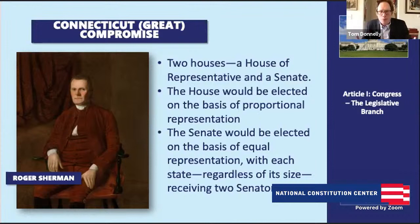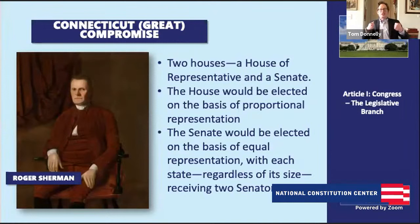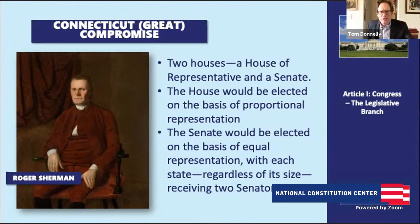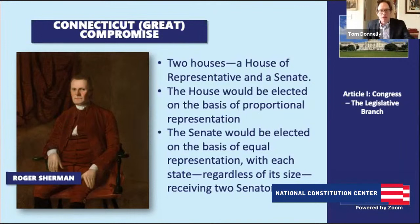The last big structural debate was how to count enslaved people for purposes of representation. Pro-slavery Southern delegates said enslaved people should count as five-fifths — a full person — for representation, which would boost the slaveholding states' power even though it would do nothing to vindicate the rights of enslaved people. Anti-slavery Northern delegates said that was hypocritical — you give enslaved people no rights and treat them brutally. In the end, another compromise was reached: the three-fifths compromise, also brokered largely by Roger Sherman, where enslaved people would count as three-fifths of a person for representation in the U.S. House.